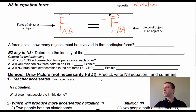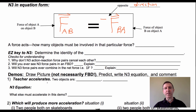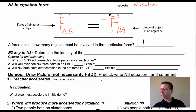How many objects must be involved in any particular force? Let's say one object — you have to have at least one. Or at least two objects. Or three or more. If there is any force in the universe that we know of, there must be exactly two objects involved.